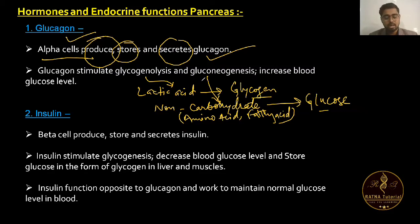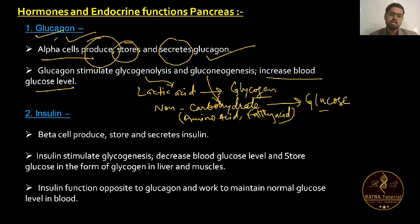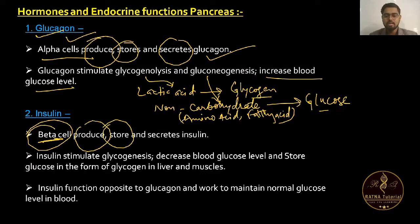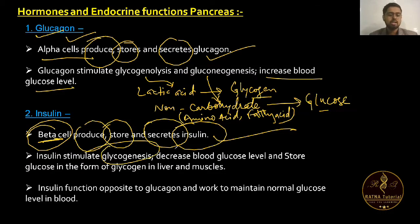So glucagon stimulates glycogenolysis and gluconeogenesis, and also increases blood glucose level. The second hormone is insulin, secreted from beta cells.